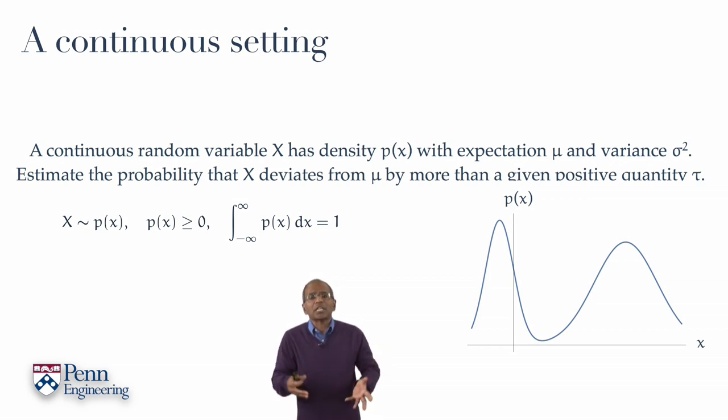On your screen you see an example of a generic density function. Now, we understand both the sample space and the probability measure in question. What is the event of interest for us?